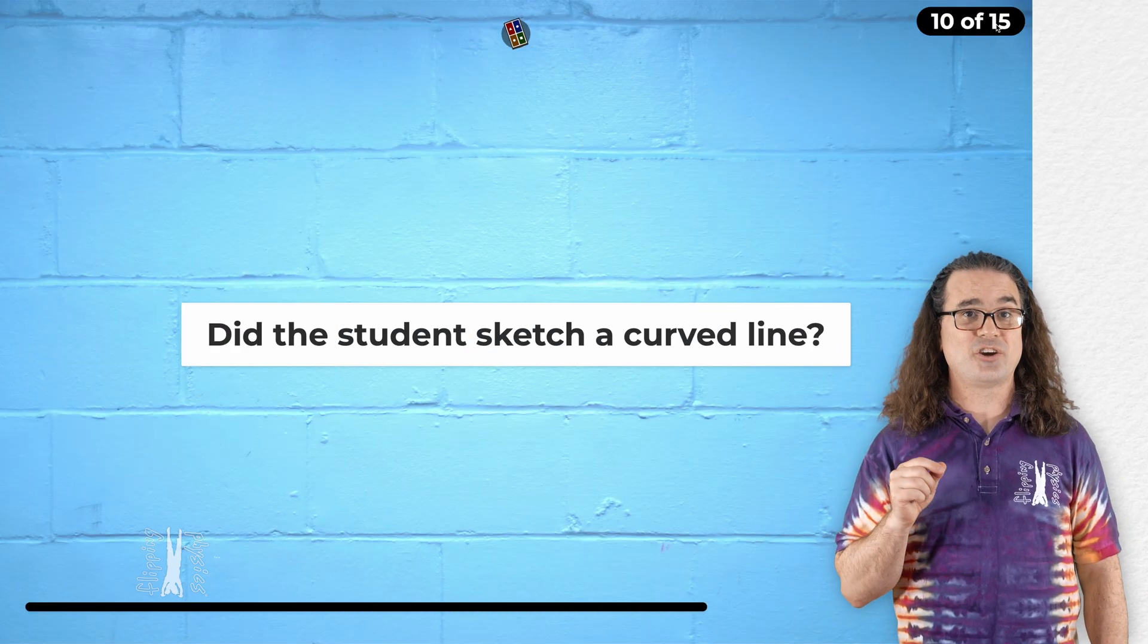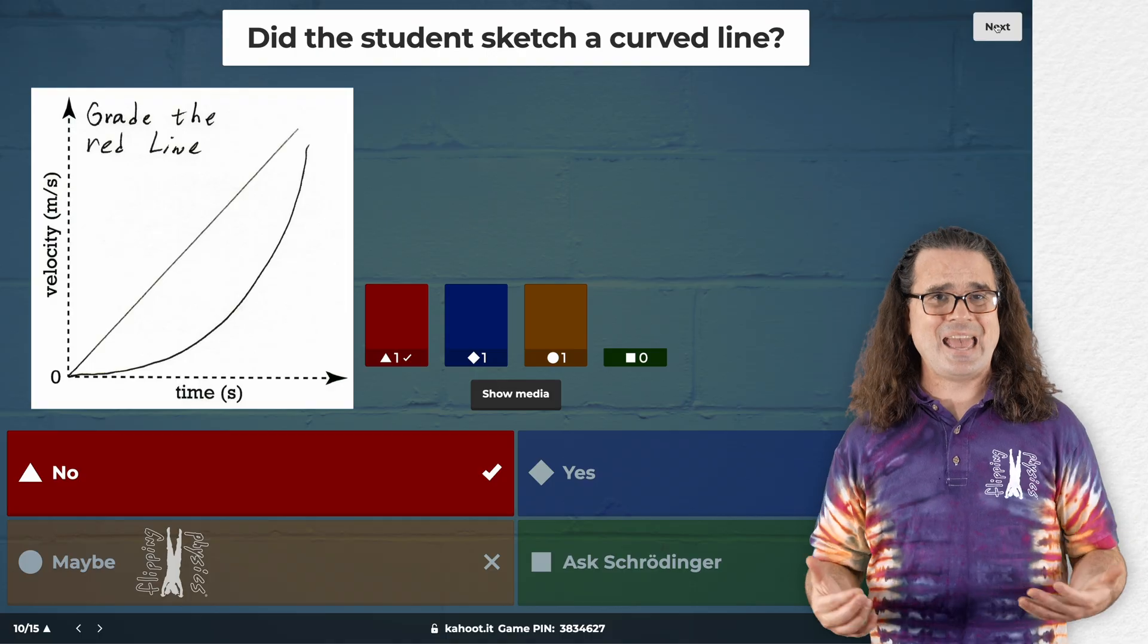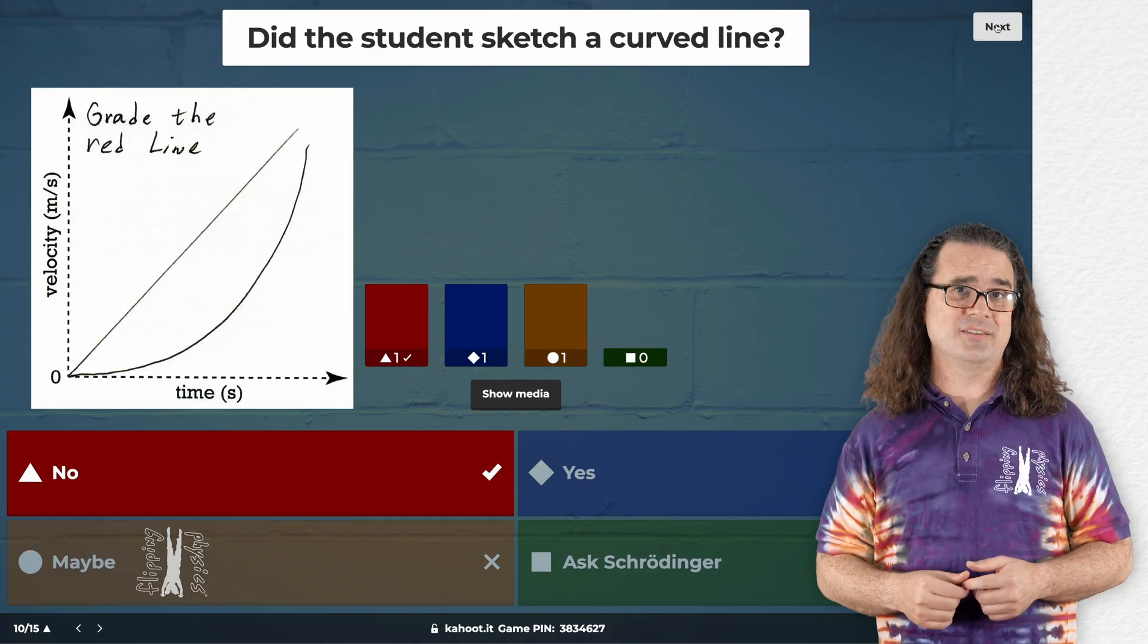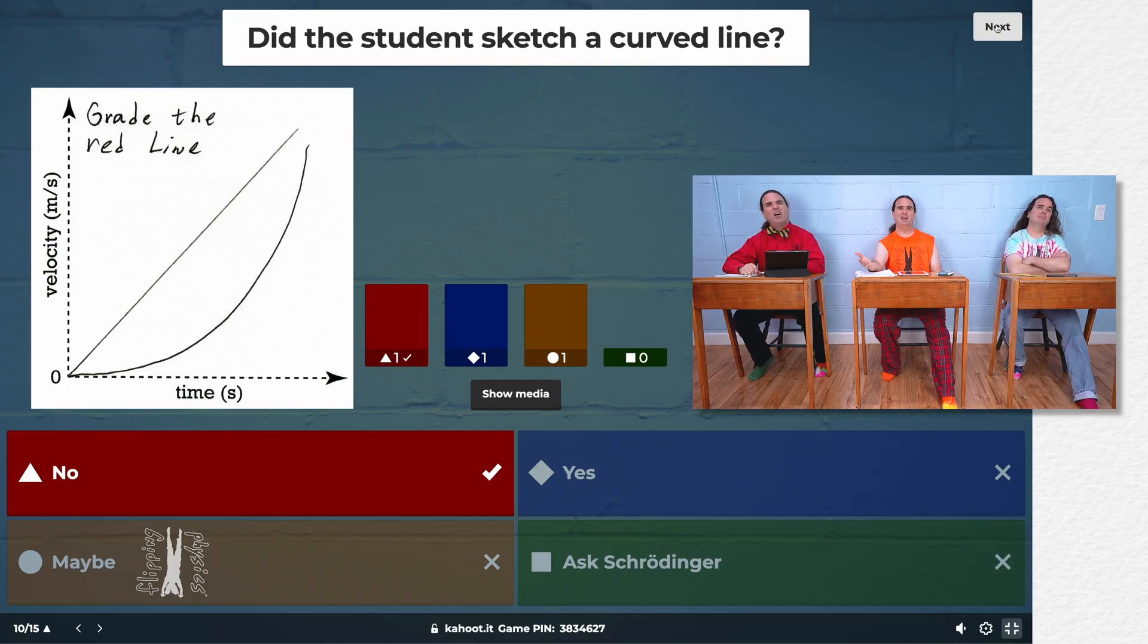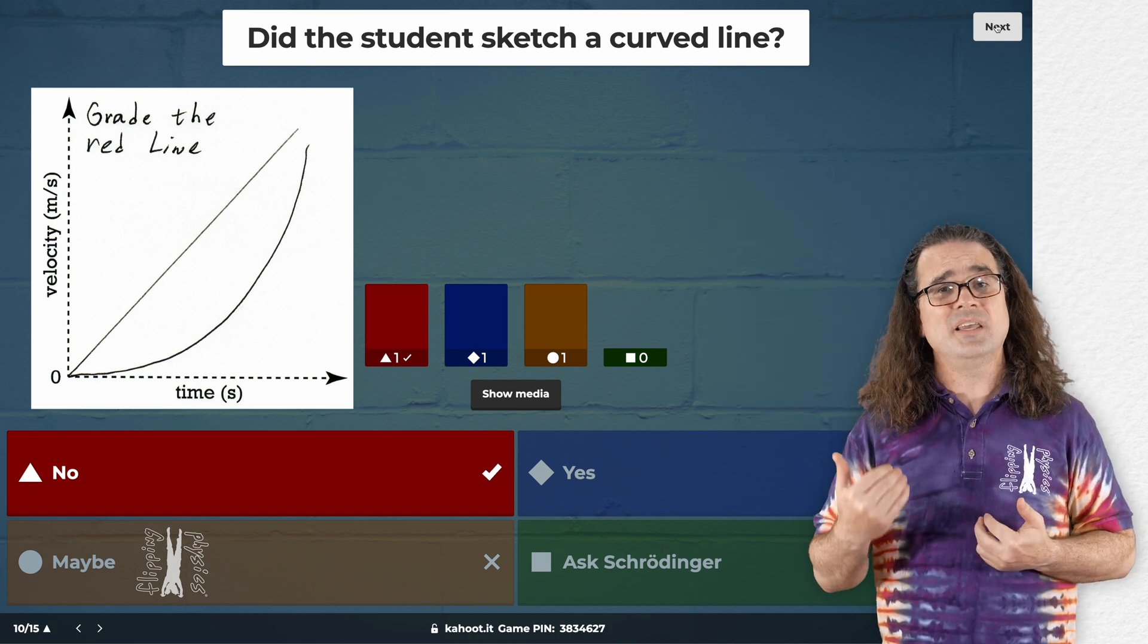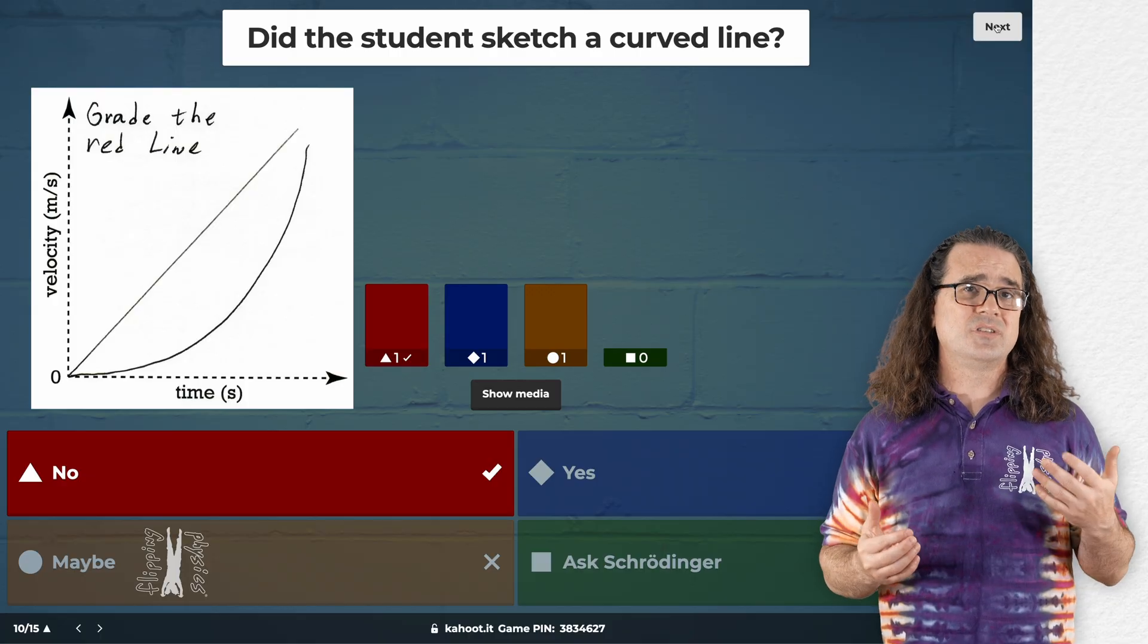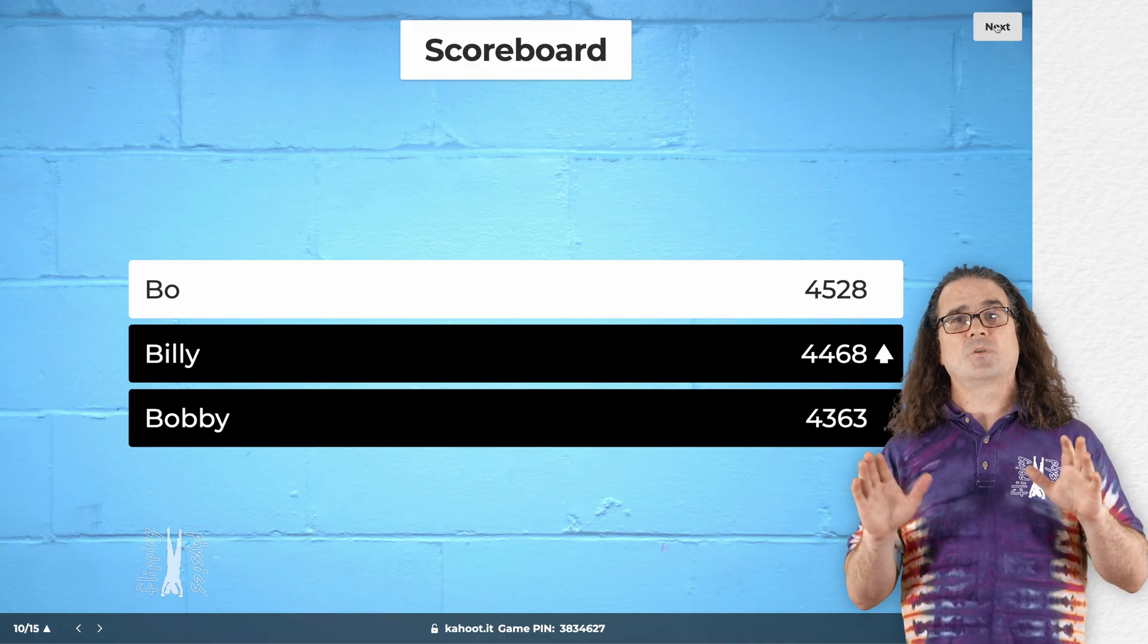And the next question again is, did the student sketch a curved line? Right. The student cannot gain a point for this because they have two different answers. And they did not cross off the one that they do not want graded. But they wrote, grade the red line, right? And which line is red? The one they drew in red. And which one is that? I don't know. Right. Exactly. Please realize every scan I saw of Student Solutions was in black and white. So do not use different colored pens, please.